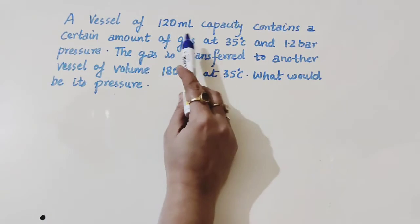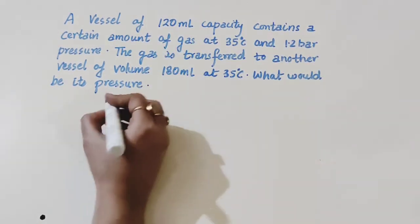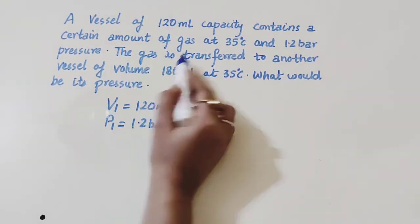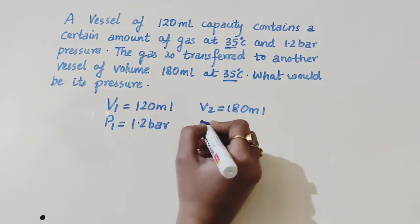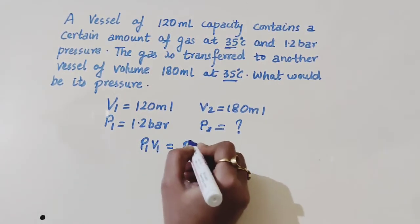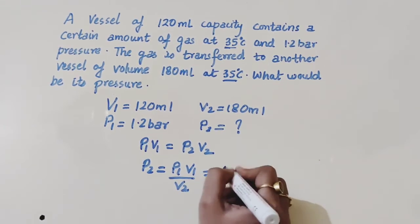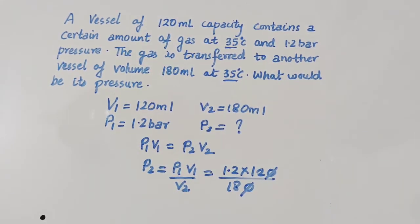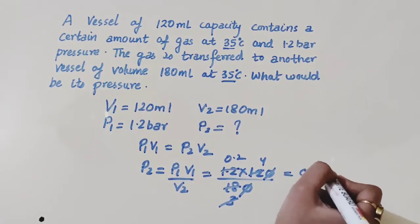Numerical 3: A vessel of 120 mL capacity contains a certain amount of gas at 35°C and pressure 1.2 bar. The gas is transferred to another vessel of volume 180 mL at constant temperature. What would be its pressure? By Boyle's Law, P₁V₁ = P₂V₂ → P₂ = (1.2 × 120)/180 = 0.8 bar.